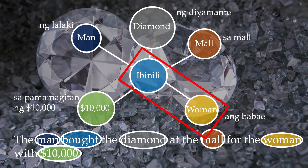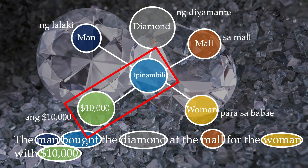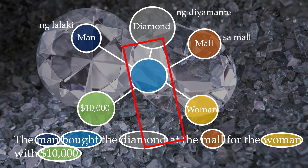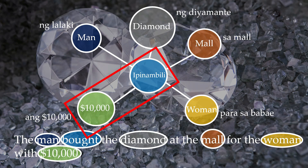What if we want to focus on the $10,000? The word $10,000 now takes ang. The verb form becomes ibinambili — you can see it's changed again from ibinili. The $10,000 was used by a man to buy a diamond at a mall for a woman. Ibinambili means the thing used to buy something — in this case $10,000. So $10,000 was used by a man to buy a diamond at a mall for a woman — that's roughly how I would translate it.